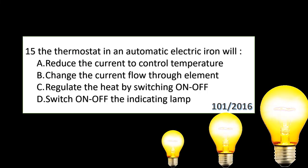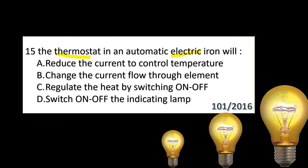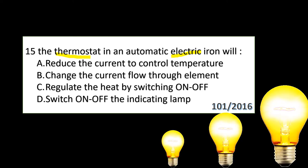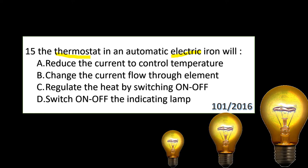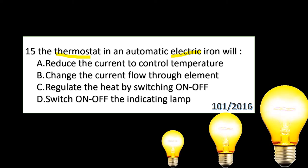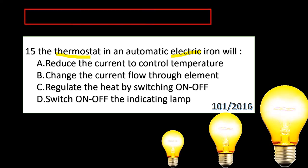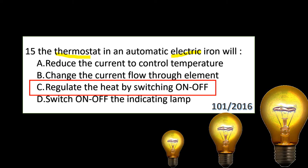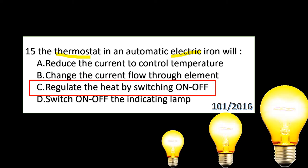The thermostat in an automatic electric iron is used to control temperature by regulating the current flow through the element, switching it on and off. The answer is: the thermostat changes the heat by switching on and off.